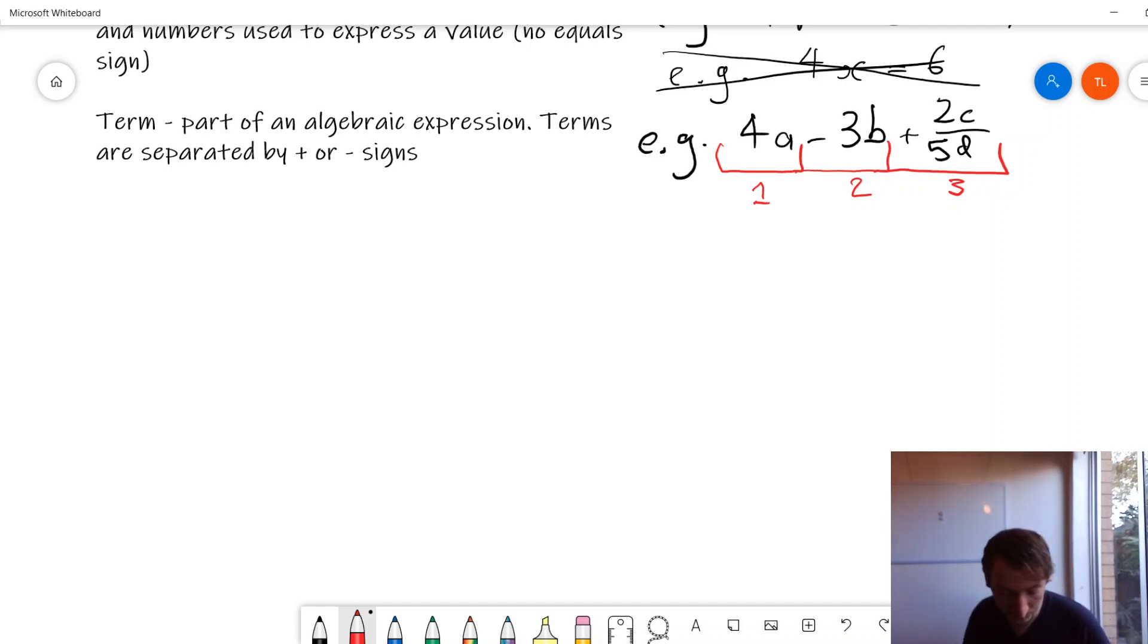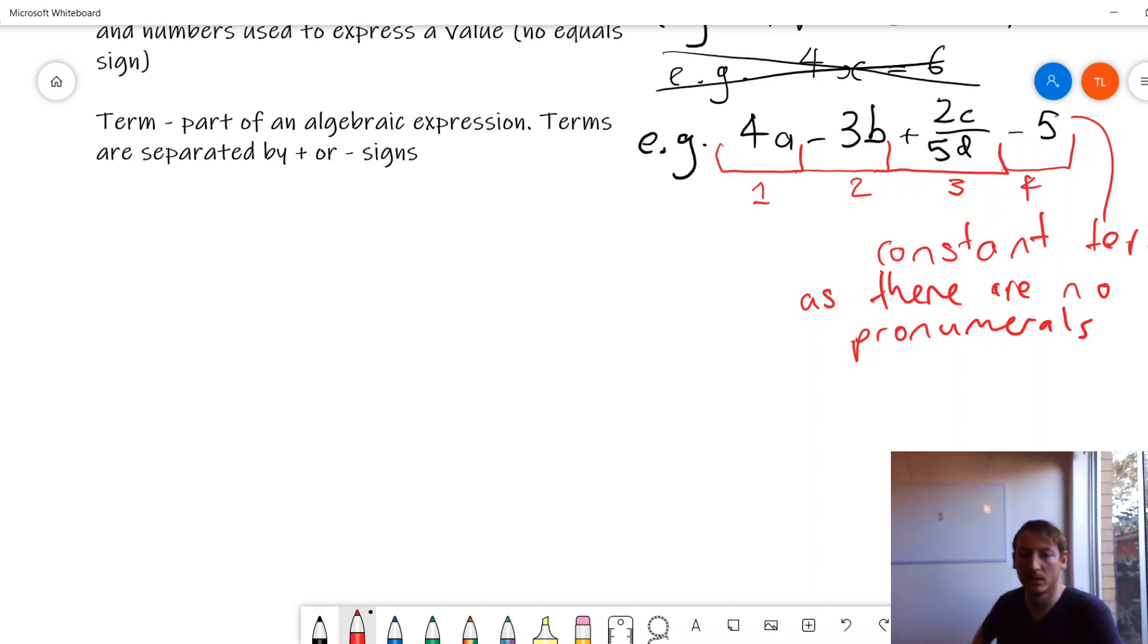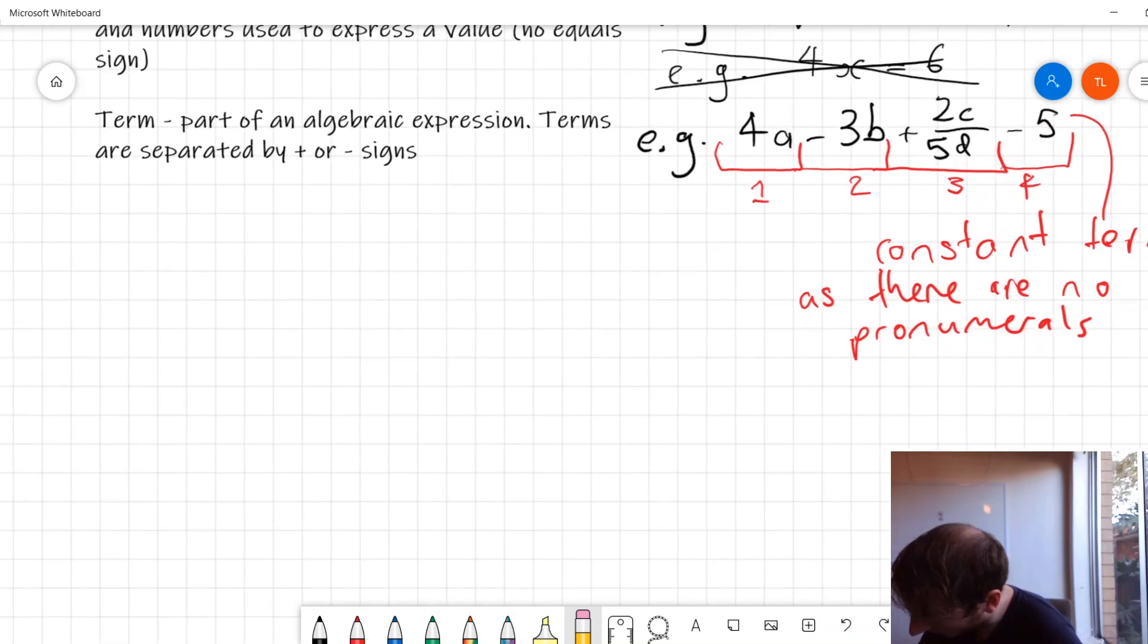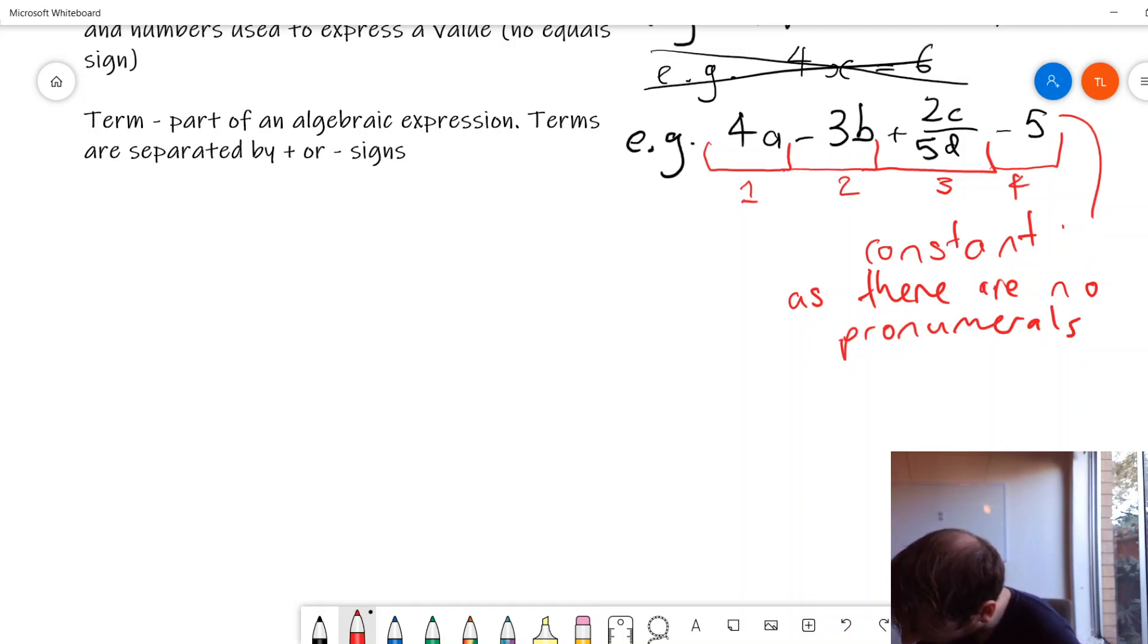Another little extra part is let's say I add on minus 5. That's its own new term so term 4, but it is also, can you see that, yeah, constant term as there are no pronumerals. So what I've got there, constant term as there are no pronumerals. So that last term there, negative 5, is always negative 5, whereas this one here 4a, that could be 20 if a was 5, it could be 100 if a was 25. It's not a constant number, it all depends on what a is.